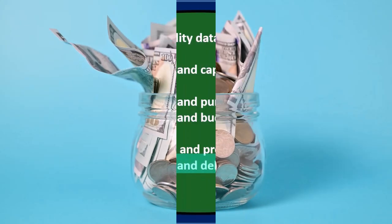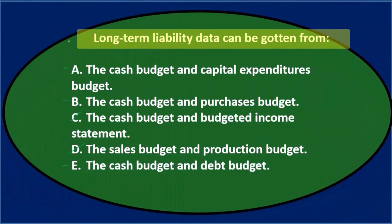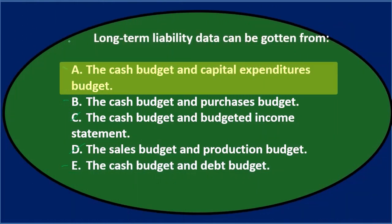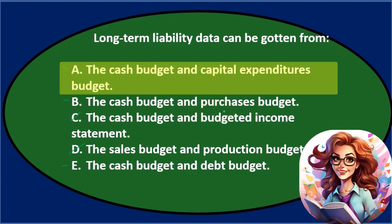Going through again: Option A is the cash budget and capital expenditures budget, which still sounds reasonable. Option B is the cash budget and purchases budget. Comparing the two, A and B both include the cash budget, but capital expenditures is more appropriate than purchases, since capital expenditures would result in a long-term liability, as opposed to accounts payable.